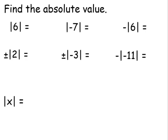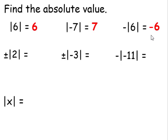Let's find the absolute value of these examples. The absolute value of 6 is simply 6. The absolute value of negative 7 is simply 7. For this next one, you might read it as negative the absolute value of 6, but I like to read it as the opposite of the absolute value of 6. Since the absolute value of 6 is 6, the opposite of this would be negative 6. Notice there was no operation or symbol in front of the first two absolute values, but in this case I had a negative in front, so therefore I have negative 6.